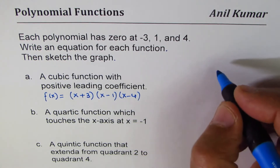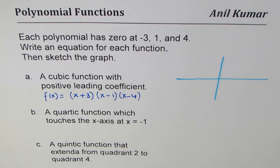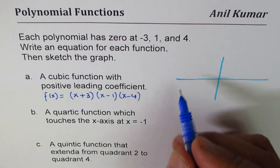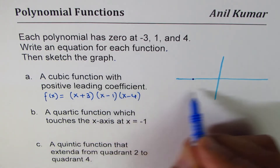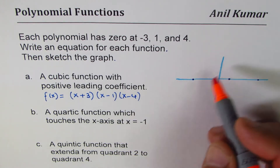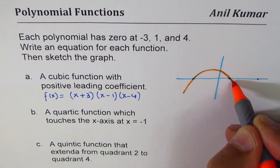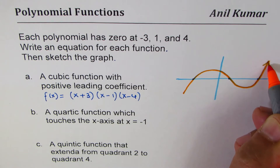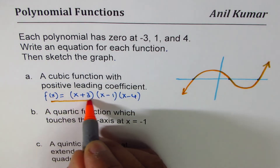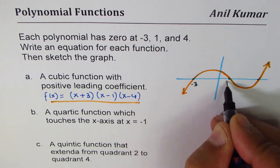Now let's sketch this function. I'll make a small sketch. We have zeros at minus 3 — let's say this is minus 3. And then we have zeros at 1 and 4. Positive leading coefficient means the end behavior of this graph is such that it extends from quadrant 3 to quadrant 1. These are all linear zeros, so you can graph it like this. That is the cubic function we just drew, where the zeros are at minus 3, 1, and 4.